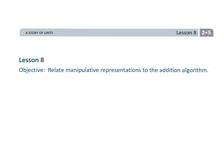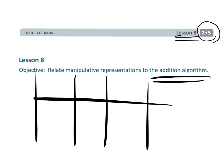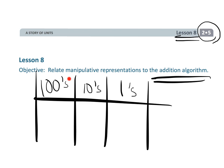That wraps up Grade 2, Module 5, Lesson 8, where students are starting to use the standard algorithm — not as a blindly followed rule, but because it makes sense. They're relating it to the place value chart and connecting that place value chart to the standard algorithm.